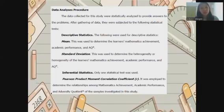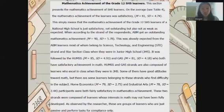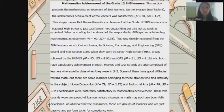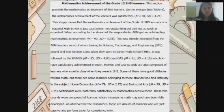In the mathematics achievement of the Grade 12 senior high school learners, the overall mean was 81 with a standard deviation of 4.71, rated as satisfactory. This means the mathematics achievement of the Grade 12 learners of the national high school is just satisfactory — not outstanding, but also not as weak as expected. According to strand, ABM got outstanding achievement.